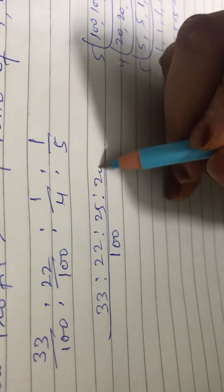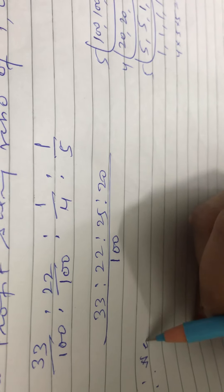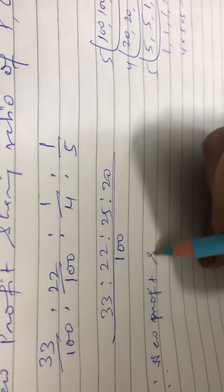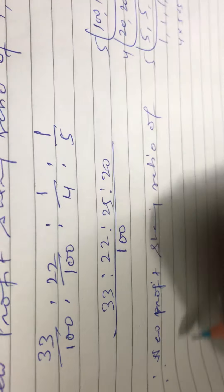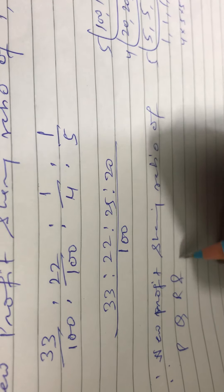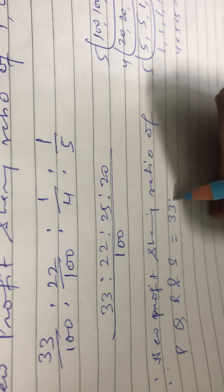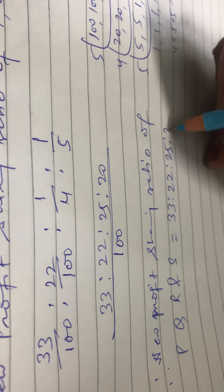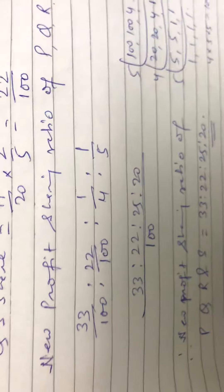Therefore, new profit sharing ratio will be: new profit sharing ratio of P, Q, R, and S will be equals to 33 is to 22 is to 25 is to 20.